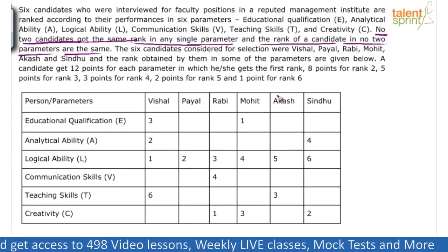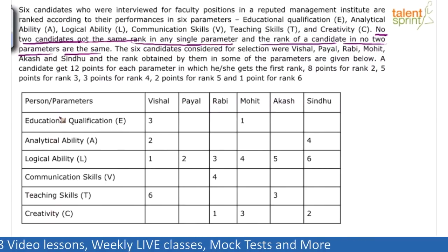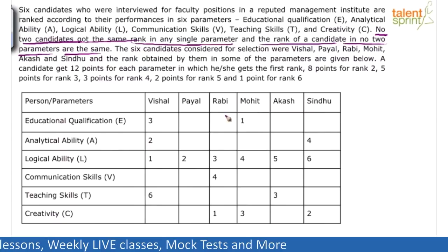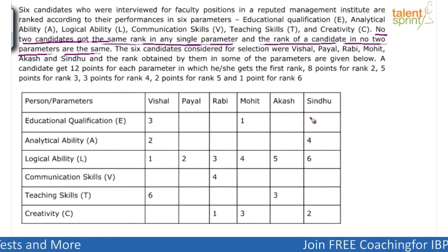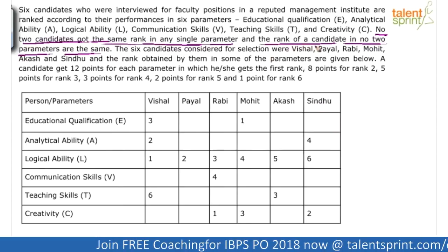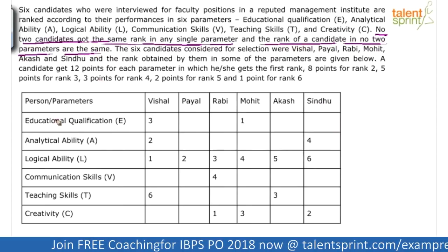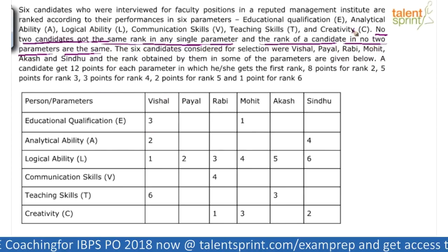The table talks about the ranks of these six persons in the six parameters E, A, L, V, T, C. Some of the ranks have been given; the others are missing. The key point to note is that no two candidates got the same rank in any single parameter, and the rank of a candidate in no two parameters are the same. So row-wise and column-wise, the ranks are going to be unique.